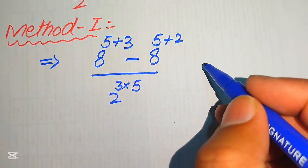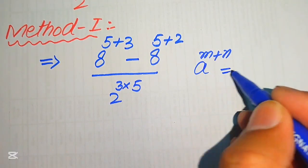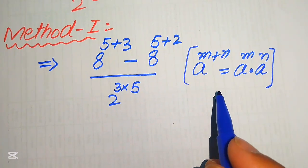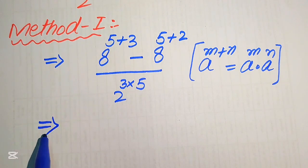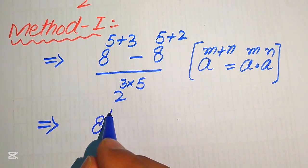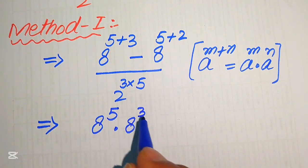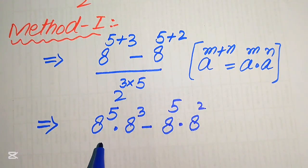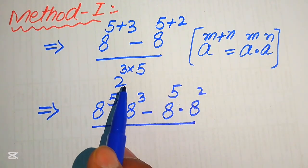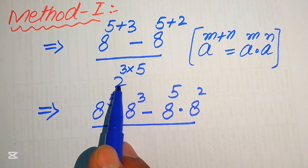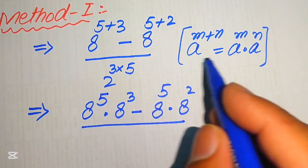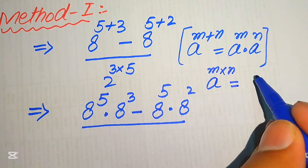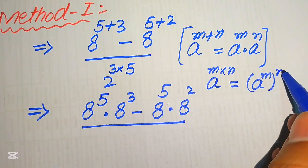After that, we use this exponent law: if we have a to the power of m plus n, it equals a to the power of m multiplied by a to the power of n. According to this law, we break the exponents of these two numerator terms. However, in the denominator we have a product in the exponent, so we cannot use this law there. Instead, for the denominator we use the law: a to the power of m multiplied by n equals a to the power of m to the power of n.